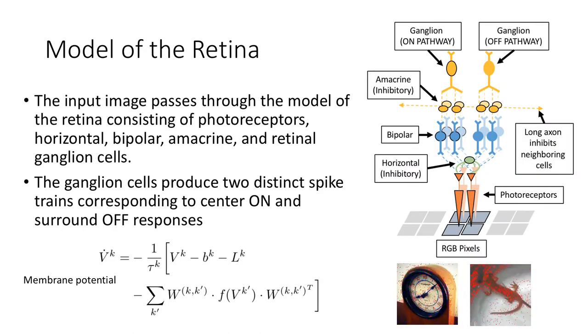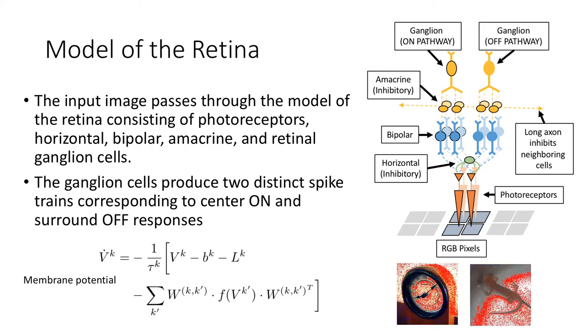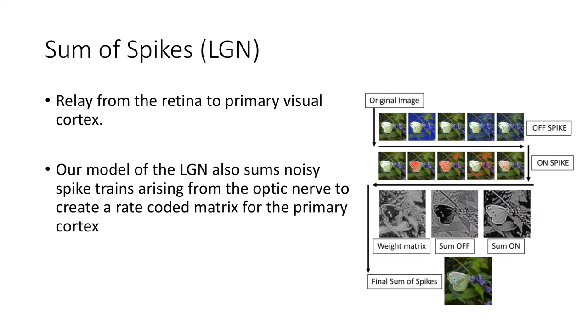First, we faithfully model how the retina captures images through the use of neuronal membrane dynamics to generate spike responses. We generate a rate-coded matrix in our LGN model which relays the retina signal to the primary visual cortex.